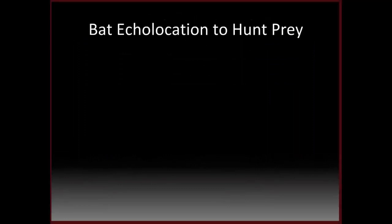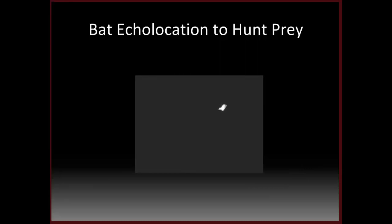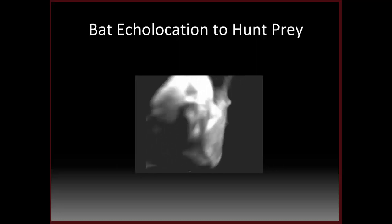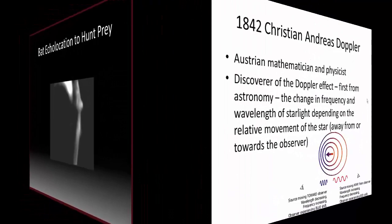Bats also use echolocation to hunt prey. In this clip, a bat will hunt a moth and catch it in mid-air. The intensity and pulse repetition of the ultrasound impulses changes as the bat homes in on the moth, so that it has a much more precise location of the prey animal.